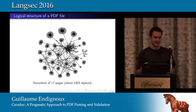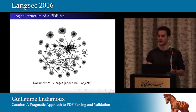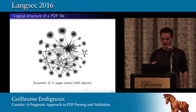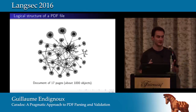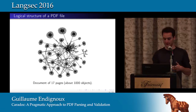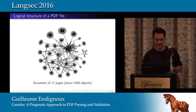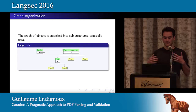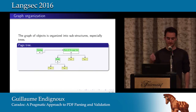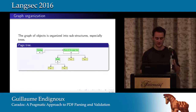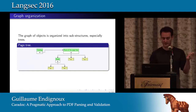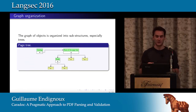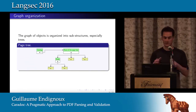At the logical level, a PDF file has references between objects. In a 17-page presentation document with about 1,000 objects, most of the structure in the graph consists of trees. For example, pages are organized as a tree where the leaves are the actual pages — the leftmost leaf is the first page. This is useful when pages share the same properties, such as dimensions.